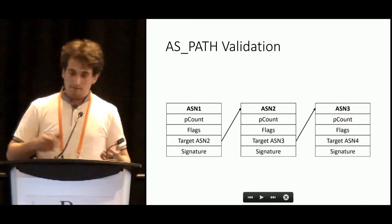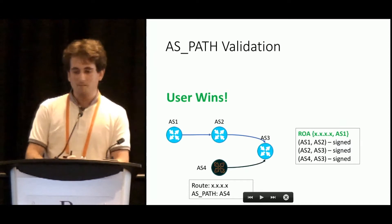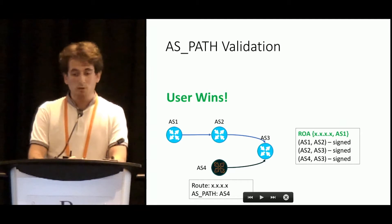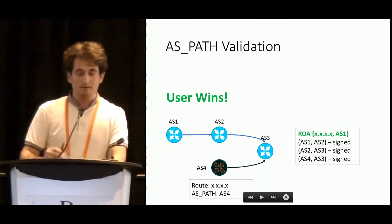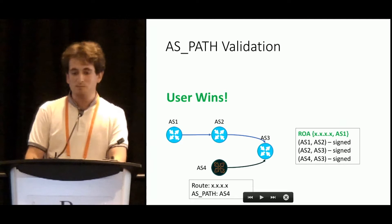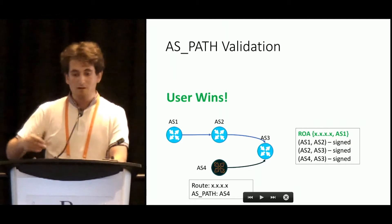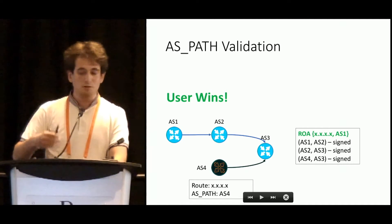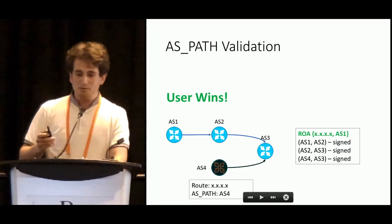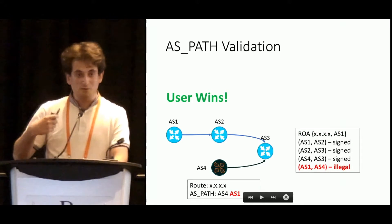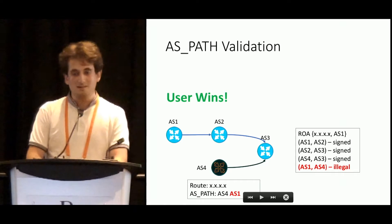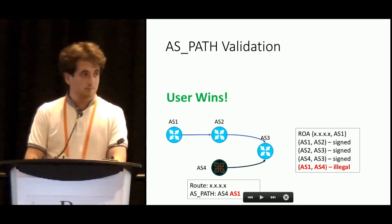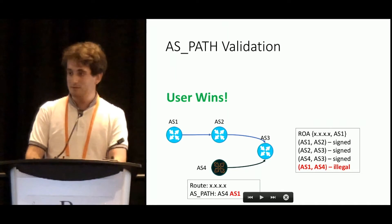Let's get back to the example. If autonomous system 4 will just advertise address space of autonomous system 1 from its own autonomous system, it will be detected using ROAs. If it then tries to create a forged signature, it will be invalid. So, does BGPsec solve our problems?